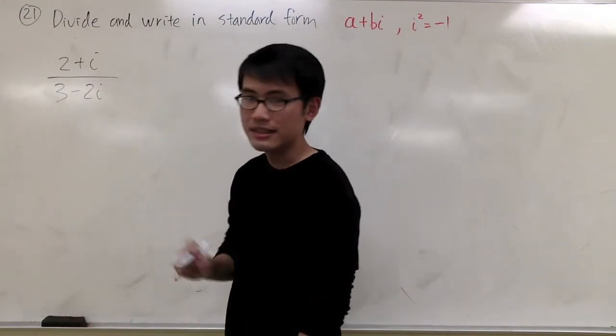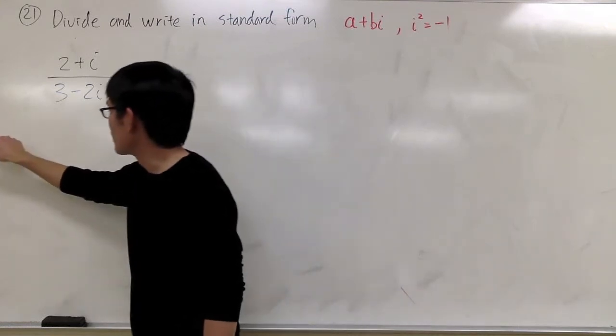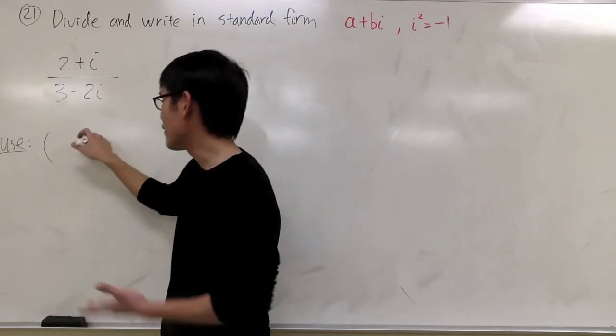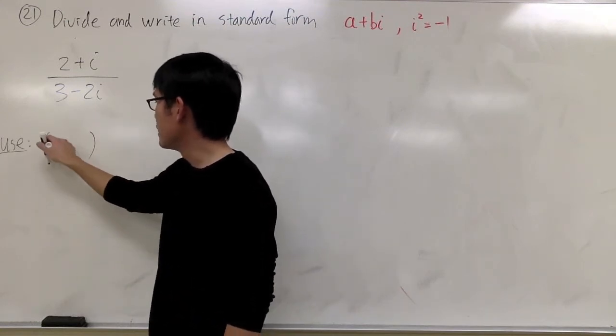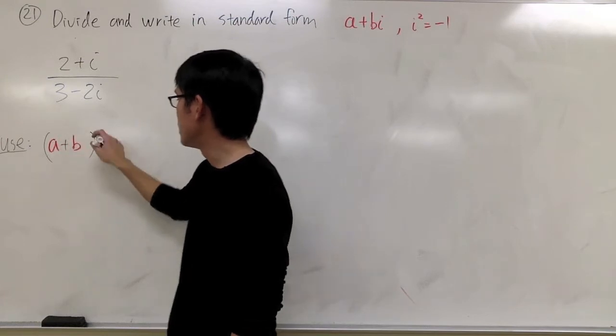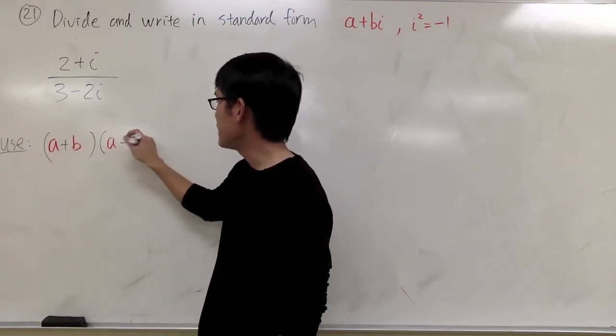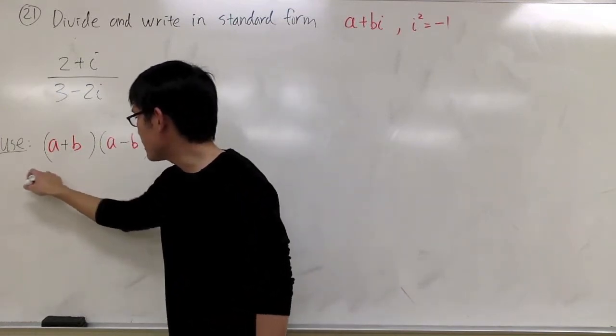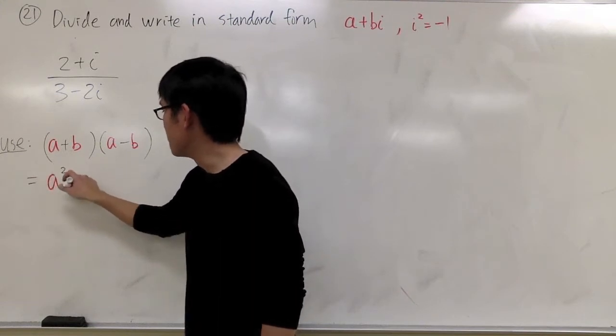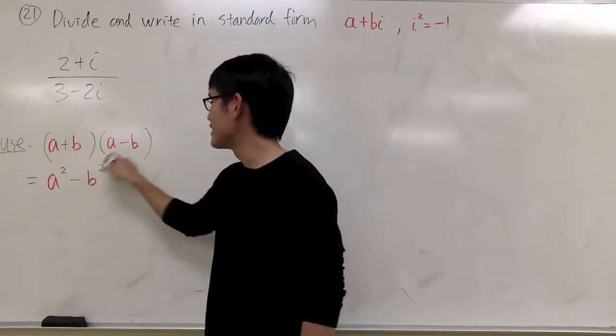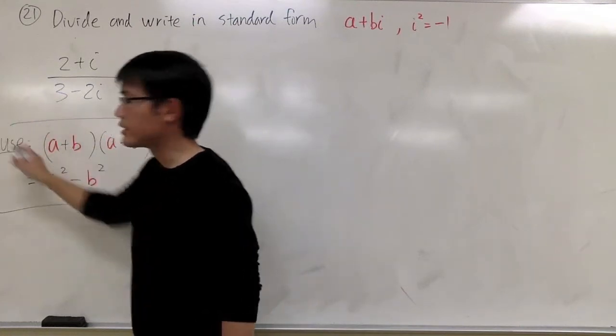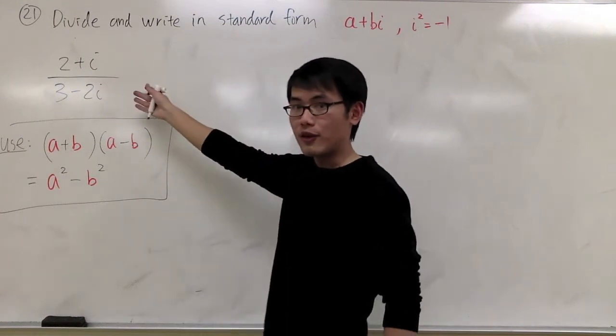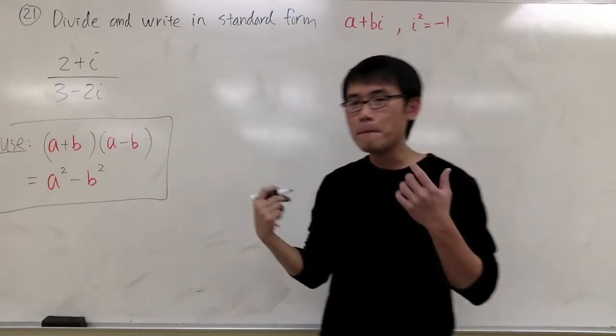You can't just square the top and bottom. It's not an equation. We are going to use this formula: when you have a plus b, if you multiply that with a minus b, you will get a squared minus b squared. That's how we can produce the squares. When you have a fraction, we can multiply the top and bottom with the same thing.